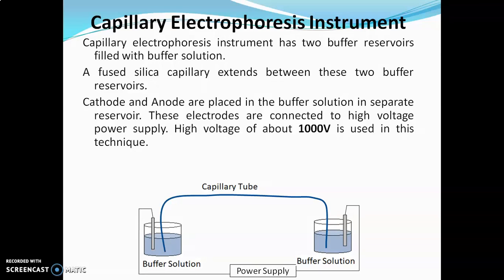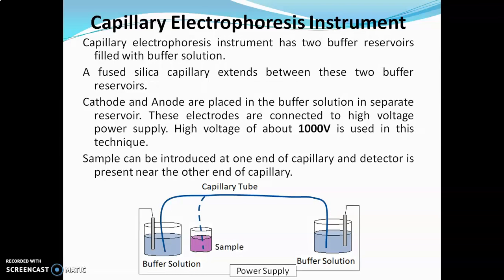In other electrophoresis, very less voltage is used. But in capillary electrophoresis, very high voltage — that is, 1000 volts — are used. Sample can be introduced at one end of the capillary, and the detector is present near the other end. When capillary ends are dipped in buffer solution, the buffer solution will get raised in the capillary due to capillary action. When voltage is applied between the electrodes, the buffer solution will start flowing in the capillary.